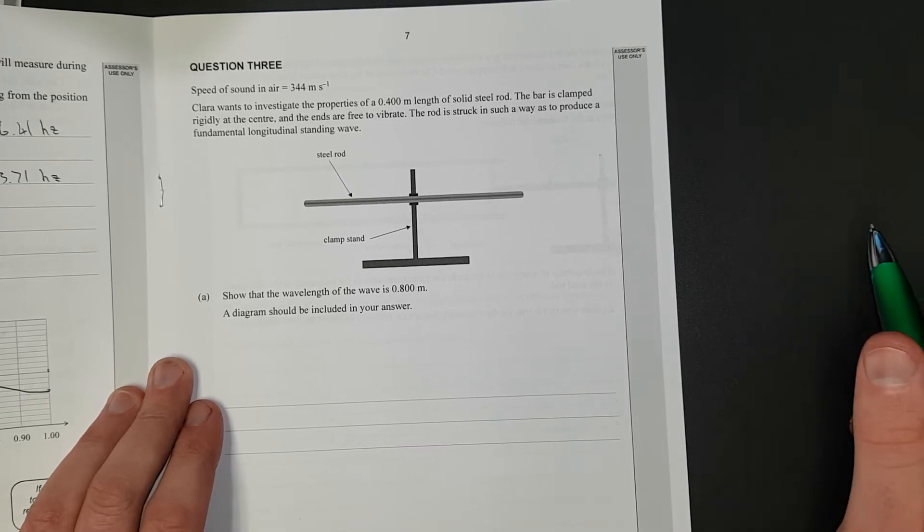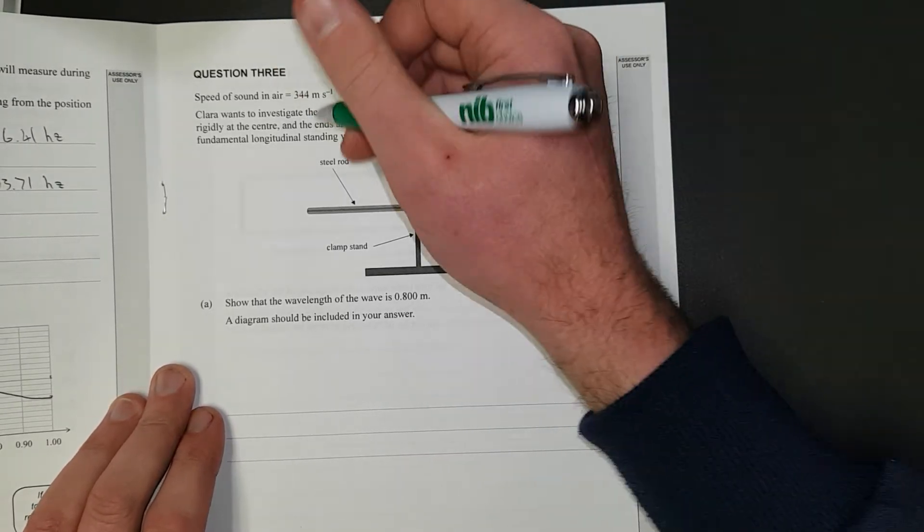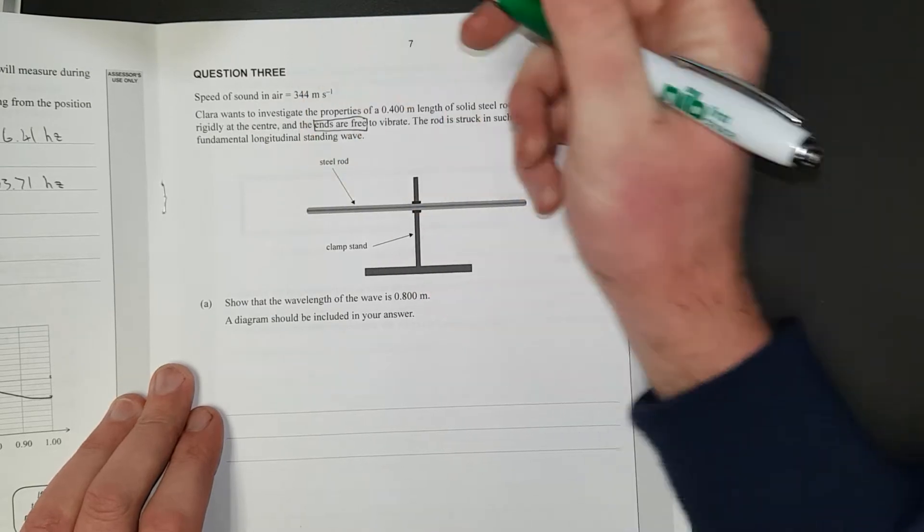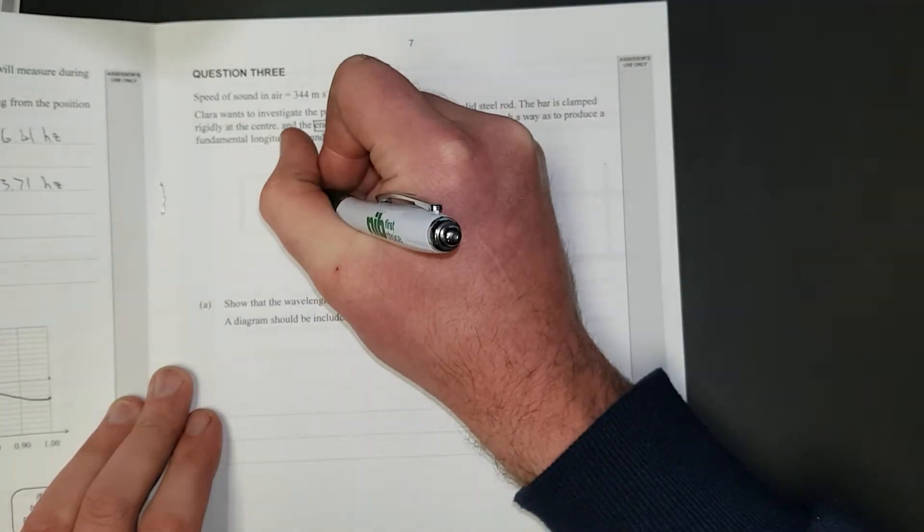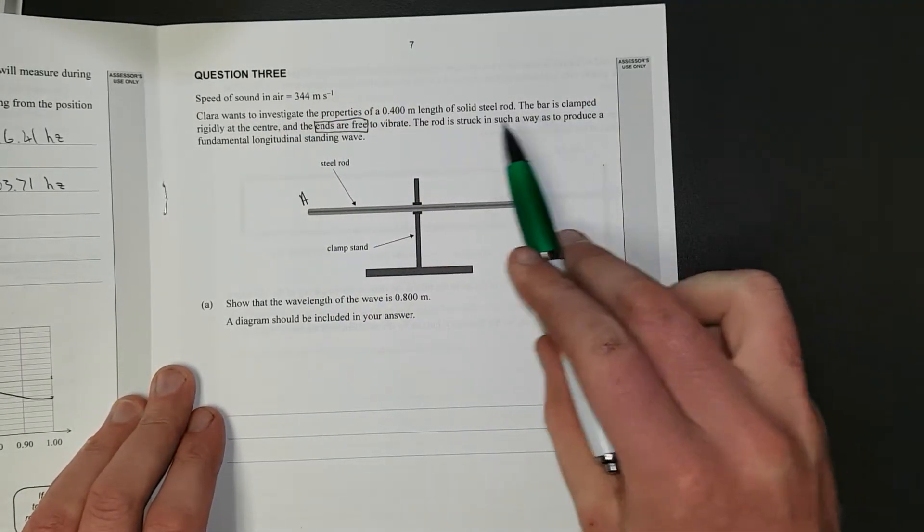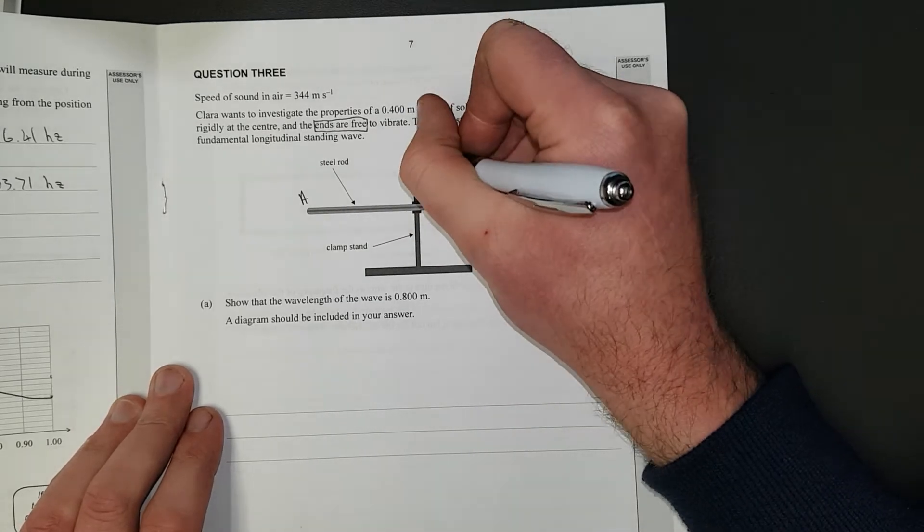So let's just highlight some key words. Ends are free to vibrate - anti-nodes. The bar is clamped rigidly at the center. This is going to be a node.